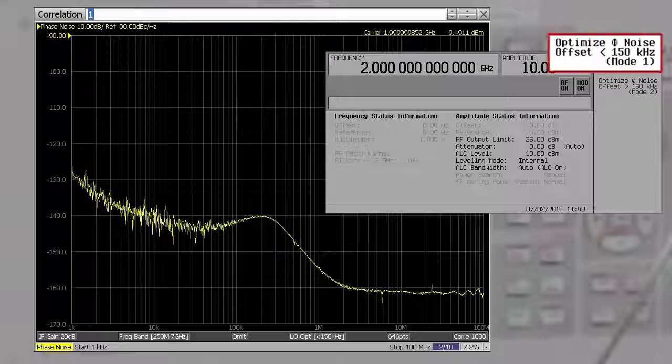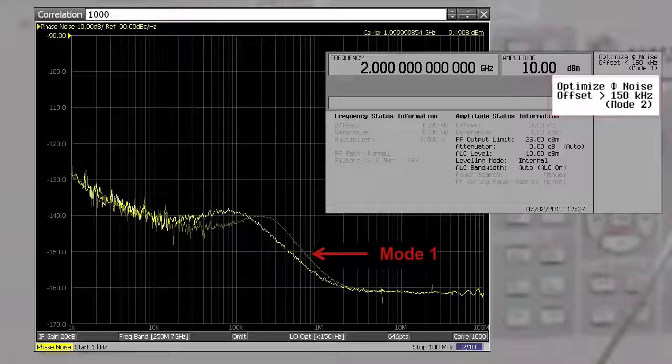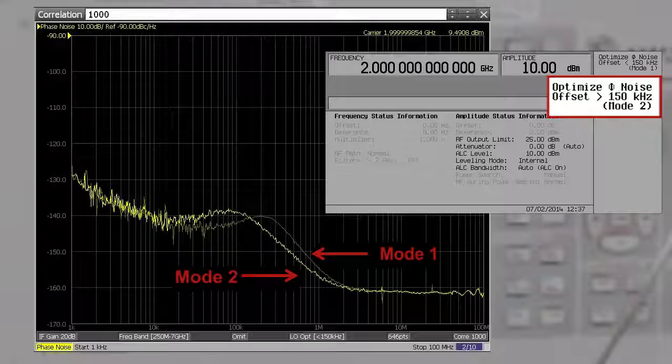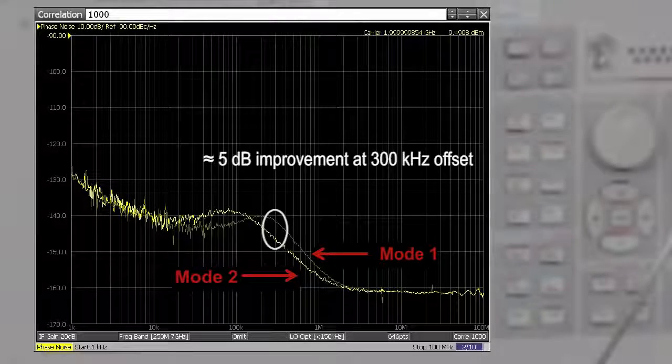The default mode is mode one for less than 150 kilohertz offsets. By switching to mode two for greater than 150 kilohertz offsets, you can get about 5 dB of improvement at the 300 kilohertz offset.